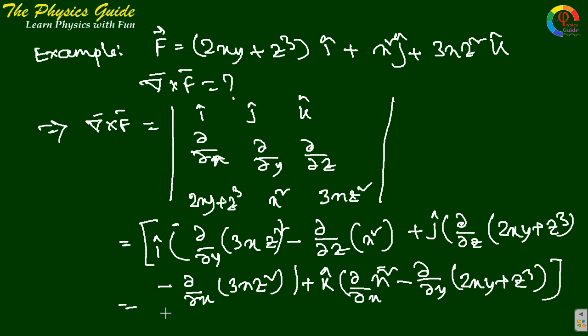So simplifying this we get 0 for the first term. There is no y in this case, there is no z, so 0. For second term j cap: 3z² minus 3z², also 0. Plus k cap: 2x minus 2x. So this means 0.